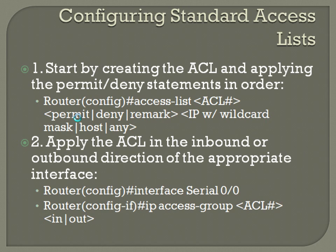The syntax is: access-list, the ACL number, the permit or deny statement, then either the IP address with a wildcard mask, host, or any. For ACLs, we always use the wildcard subnet mask, not the normal subnet mask. One easy way to get the wildcard mask is to take 255.255.255.255 and subtract the actual subnet mask. For example, a /30 has a subnet mask of 255.255.255.252 — subtracting gives you 0.0.0.3 as the wildcard mask. Always remember that ACLs use the wildcard mask; don't put the subnet mask in or you'll get a completely different range of IPs permitted.